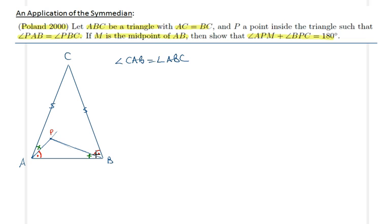So we have that CAB is equal to ABC because of isosceles triangle. And second of all, we know that angle PAB is equal to angle PBC, which is given in the problem. This implies that angle PAC, the green one, is equal to angle PBA.